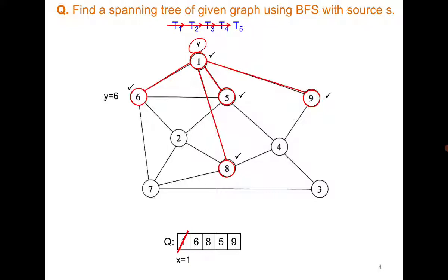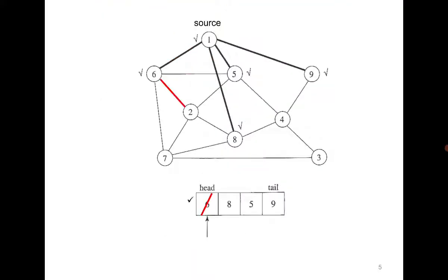Since the neighbors of vertex 1 have already been visited, we delete 1 from the queue and now move to vertex 6, the next one. We explore its neighbors which are not already in the queue. Since 1 has already been added, from 6 we won't go to 1, but we will visit the other neighbors not in the queue — for example, 2 and 7. So from 6 we go to 2 and 7.